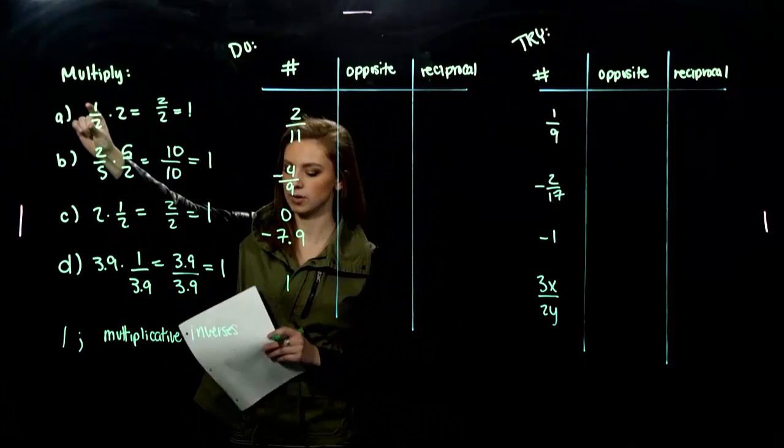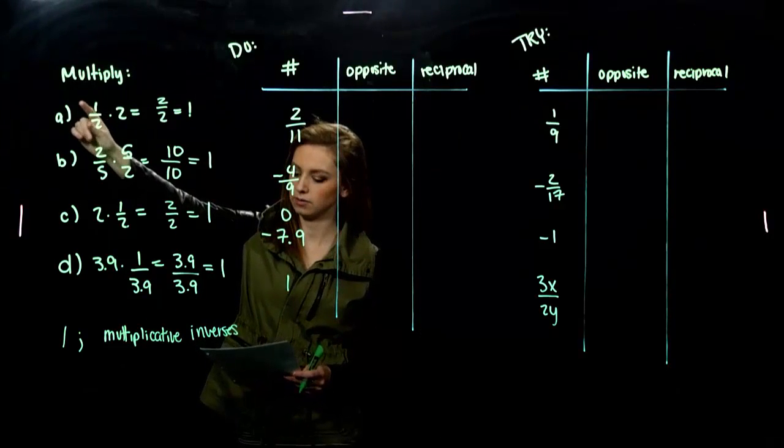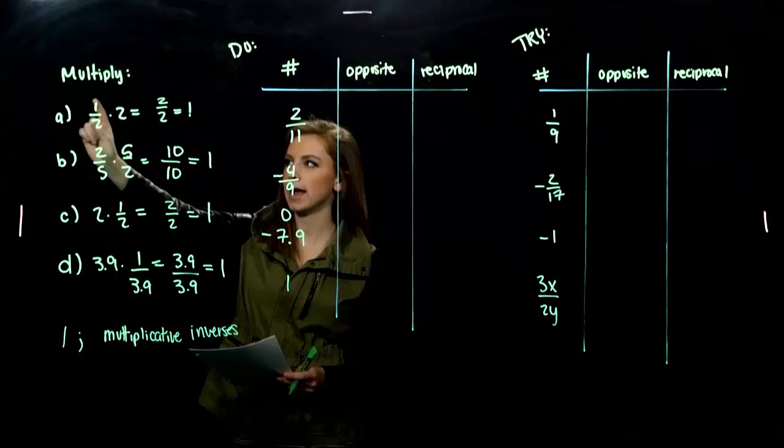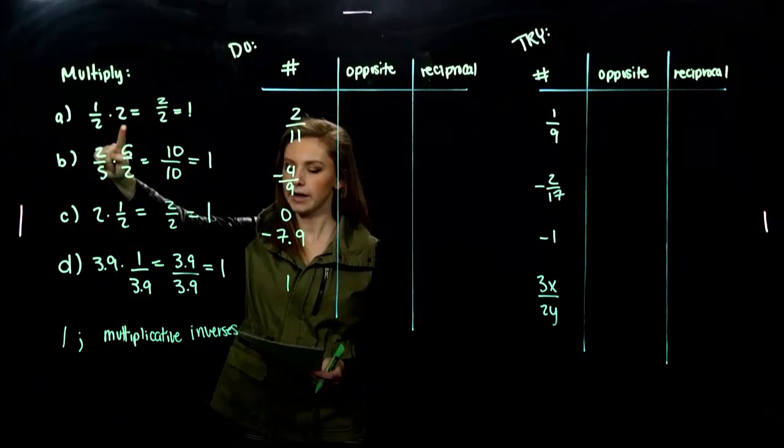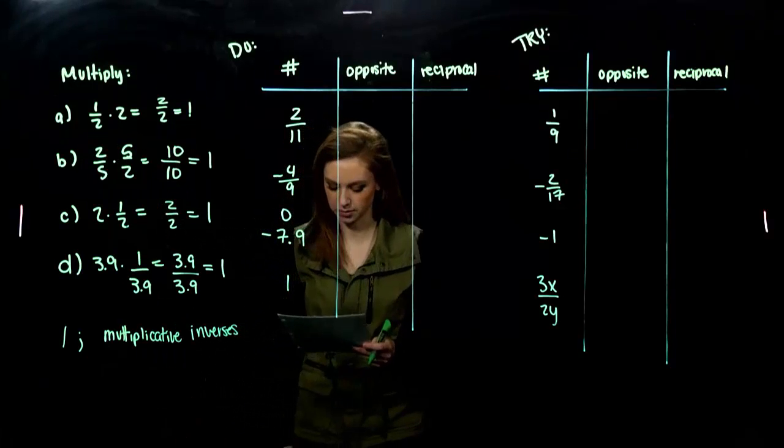So, the inverse, or the multiplicative inverse, reciprocal, that's the other word, of 1 half is 2. And the reciprocal of 2 is 1 half. We can go back and forth between the two.